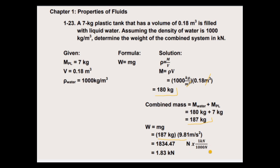And converting it to kilonewton, we have to divide it by 1000. So let's cancel this newton. Then 1834.47 divided by 1000 equals 1.83 kilonewton. So this is the weight of the combined system in kilonewton.